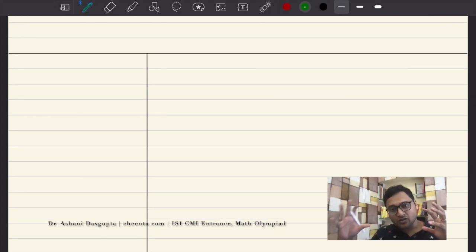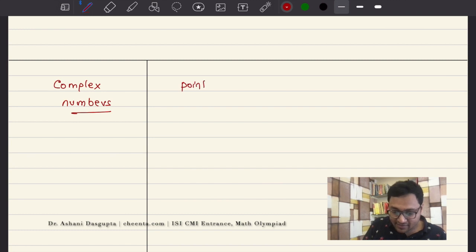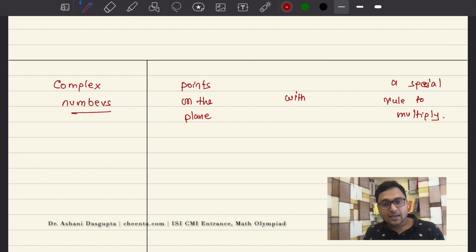Now, let's connect this function with complex numbers. So to do that, we have to first understand what are complex numbers. The way I think about complex numbers is like this. They are simply points on the plane with a special rule of multiplication, special rule to multiply. Now, many of you have seen complex numbers as A plus iB forms, where A and B are real numbers. Here, we will take a slightly different approach. We will take the polar coordinates.